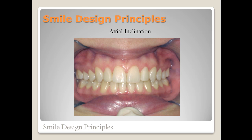Axial inclination of the anterior teeth is another factor that enhances the aesthetics of the smile design when done properly. The axial inclination should gradually increase as you go distally in the smile zone. If you picture an imaginary line from the root apex to the middle of the incisal edge, this line should tip slightly towards the distal, and the inclination is slightly more pronounced from central to lateral and from lateral to canine. If this inclination is in the wrong direction, it will make the smile less attractive.